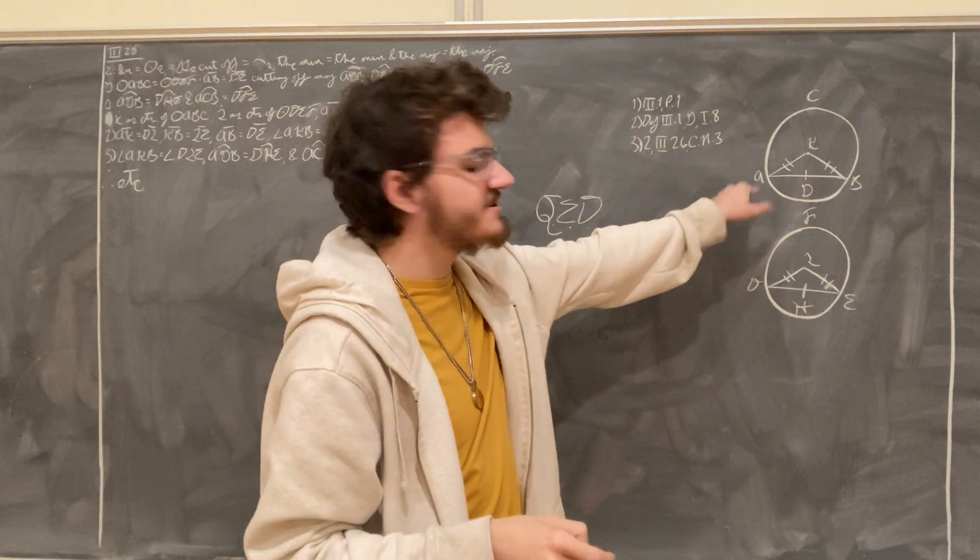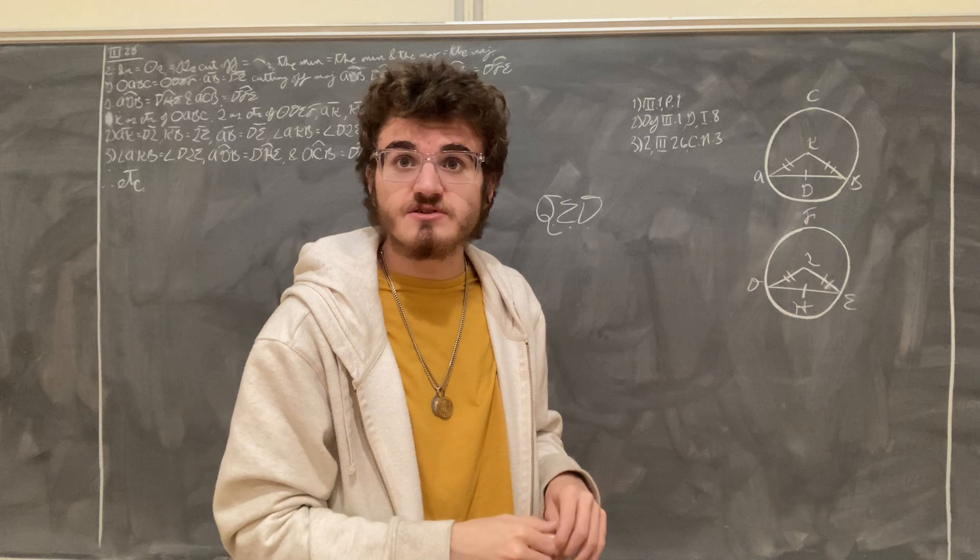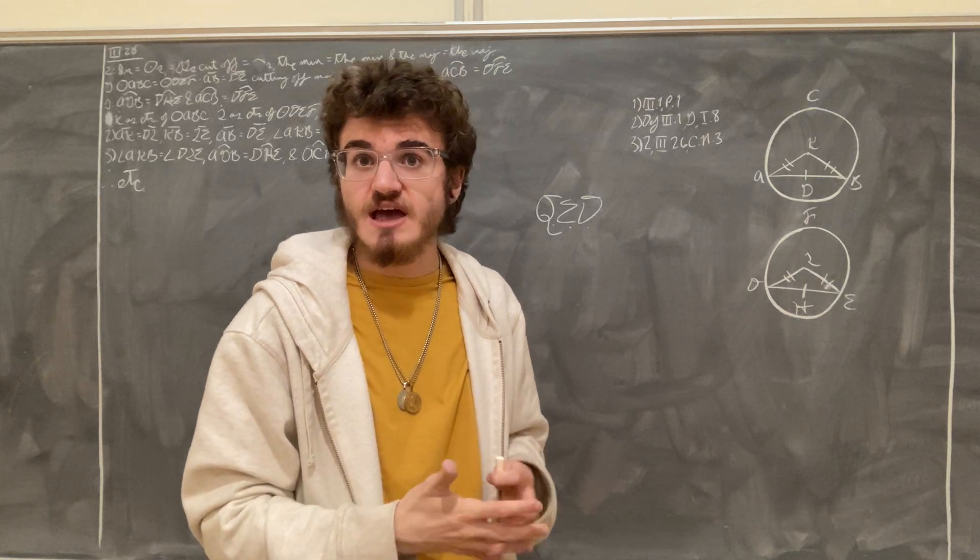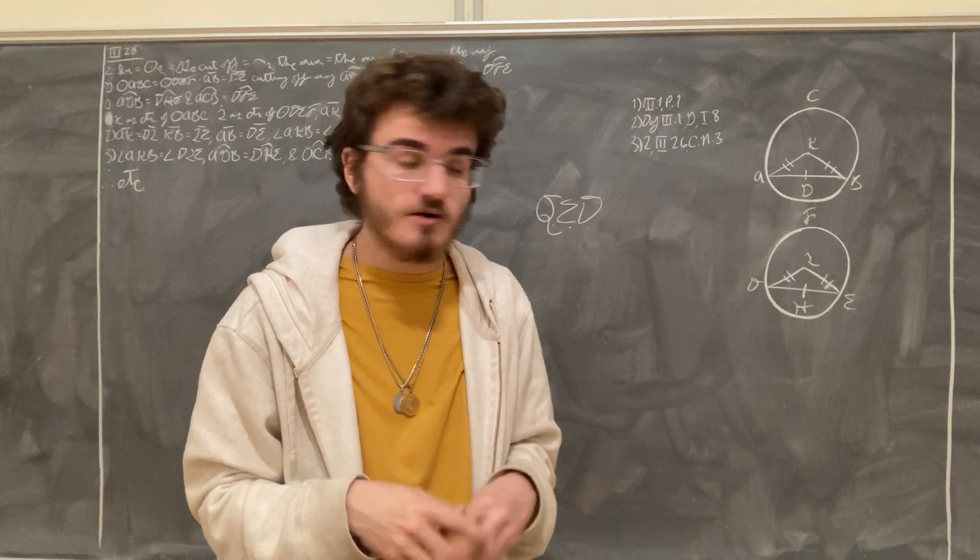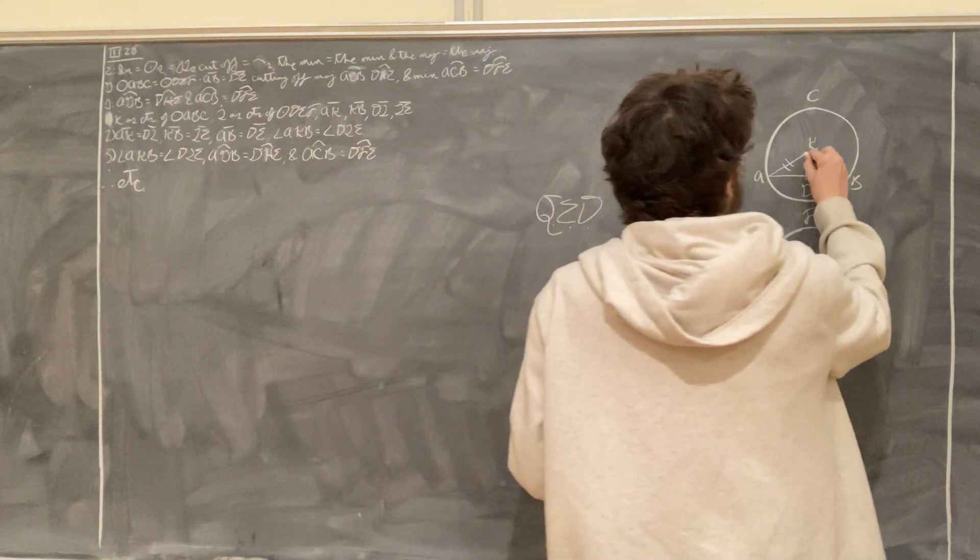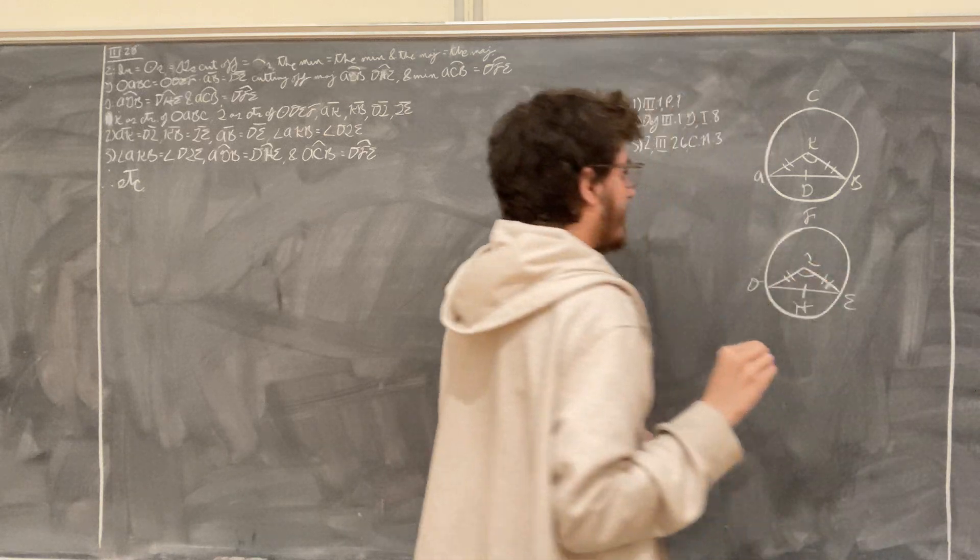And we were also given that the straight line AB is equal to the straight line DE. And so in these two triangles, AKB and DLE, we have 3 sides equal to 3 sides, and so by proposition 1-8, these triangles AKB and DLE must be equal in all respects. Namely, that the angle AKB is equal to the angle DLE.